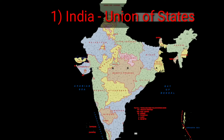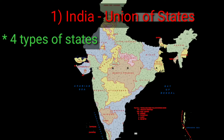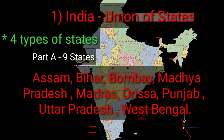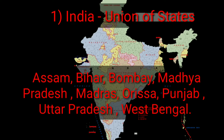In 1950, there were four main types of states. Part A had 9 states: Assam, Bihar, Bombay, Madhya Pradesh, Madras, Odisha, Punjab, Uttar Pradesh, and West Bengal.